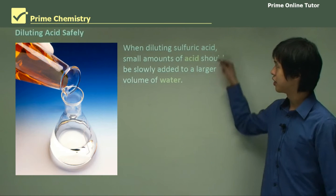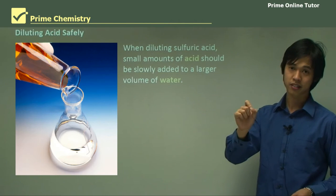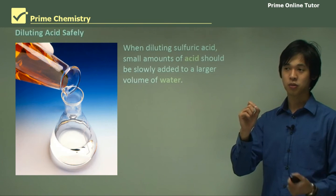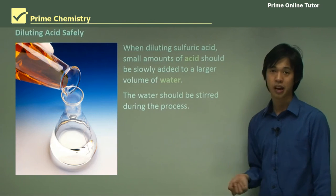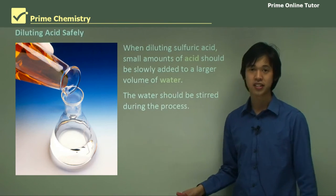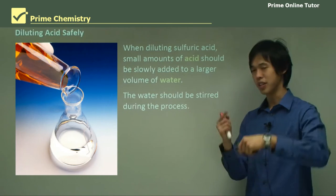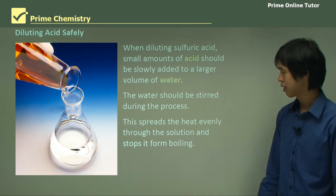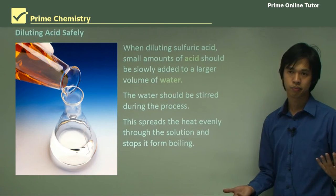So what do we do to keep dilution safe? We only add small amounts of acid to a large volume of water — tiny drops of acid into big volumes of water. The large volume of water can absorb the heat and won't boil, and the small amount of acid won't cause any splashing. The water should also be stirred during the process so the heat doesn't build up locally in one area but is evenly distributed through the beaker or flask, which stops it from boiling.